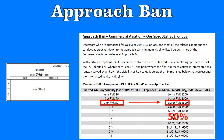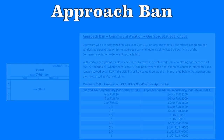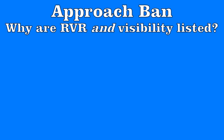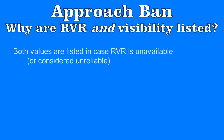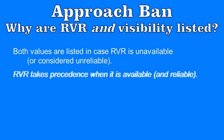I've attached links to printed copies below — please feel free to download them, print them, and use them while you're simming. Both RVR and visibility values are listed on the commercial operator tables in case the RVR is not available. When looking at the approach ban, RVR, when it is available and considered reliable, takes precedence. More about RVR reliability later.